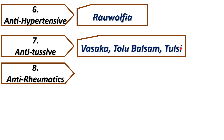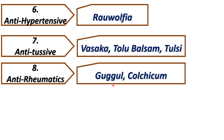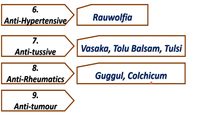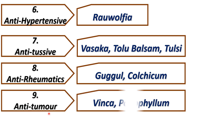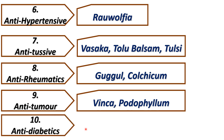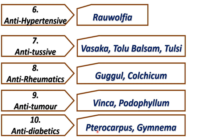Eighth is anti-rheumatics, covering gugul and colchicum. Ninth is anti-tumor drugs, covering vinca and podophyllum. Tenth is anti-diabetics, covering pterocarpus and gymnema. Gymnema tea can be used to paralyze the taste buds on the tongue, so it is used in the treatment of diabetes.